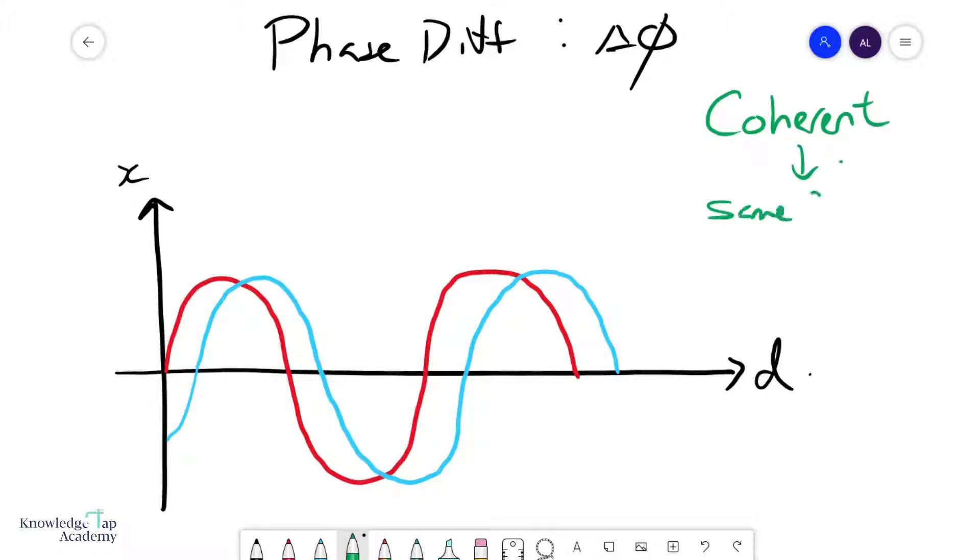they have the same wavelength, frequency, and speed. Like what you see here, these are coherent waves. Incoherent waves will look a bit weird, like one of them could be doing this and one of them could be doing that. That's just something we don't really look at in A-levels. So basically, when you look at